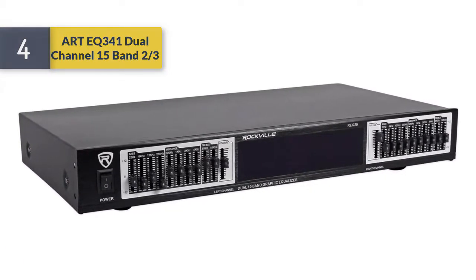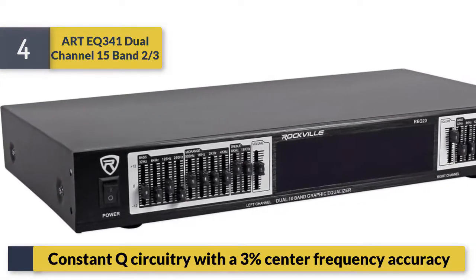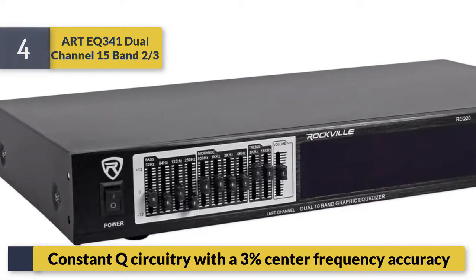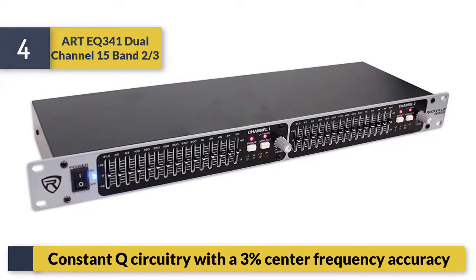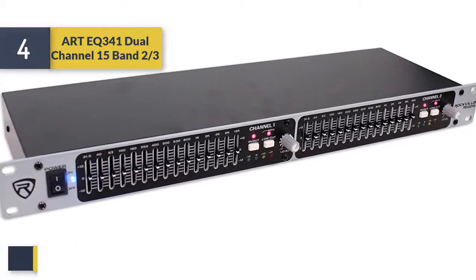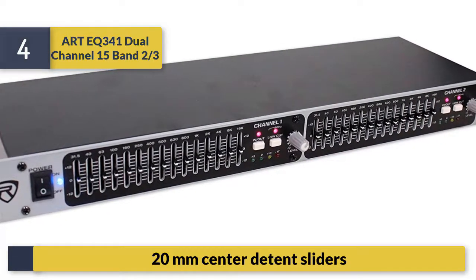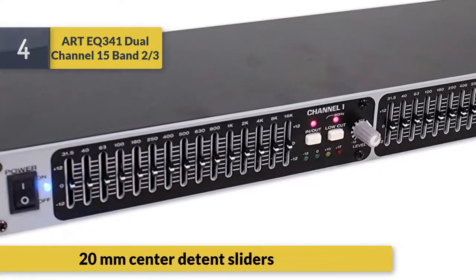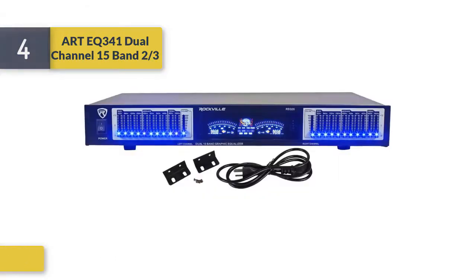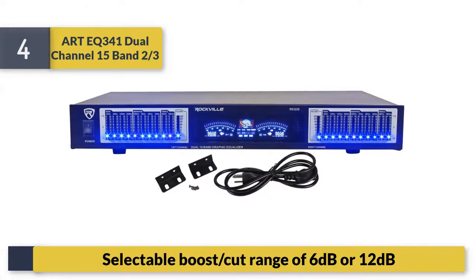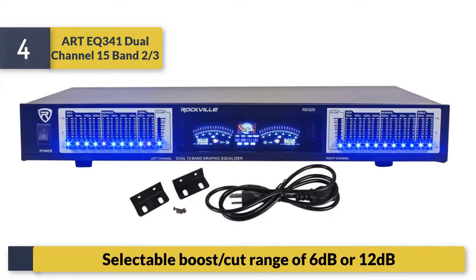Number four: RT341. Dual channel 15-band, two-thirds octave constant Q circuitry with three percent center frequency accuracy. Features 20mm center detent sliders and selectable boost/cut range of 6 dB or 12 dB.